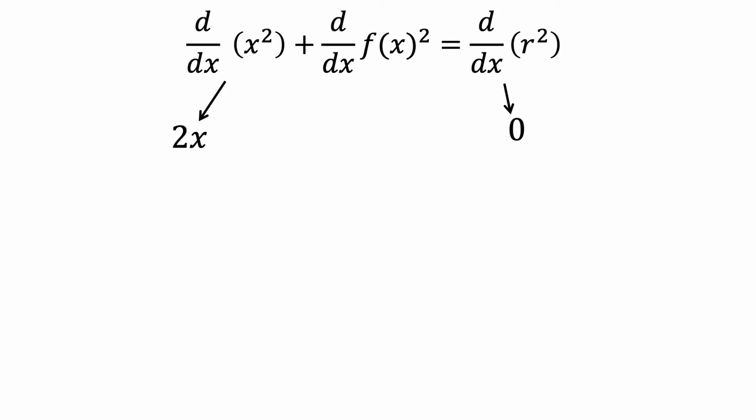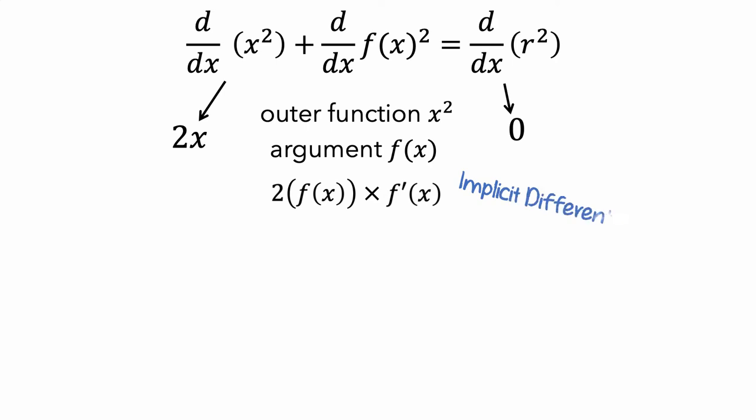Now let's think about that term in the middle. It actually looks like it's a composition of functions, where the outer function is x squared, and the argument, or the inner function, is f(x). So using the chain rule, the derivative of this term is 2 times f(x) times the derivative of f(x). What we just did here was a technique called implicit differentiation, where we used the chain rule without having an explicit formula for f(x).